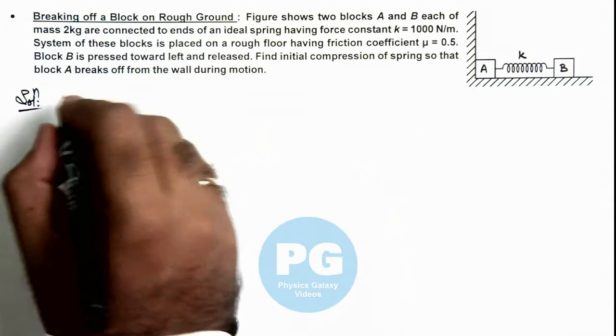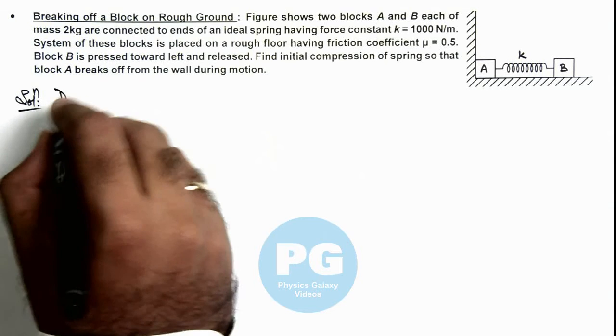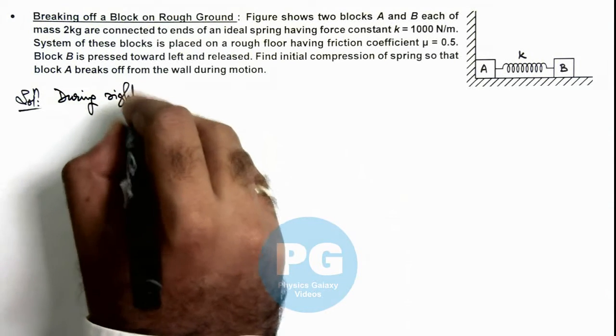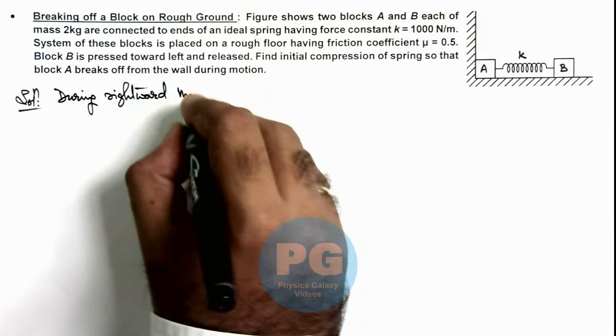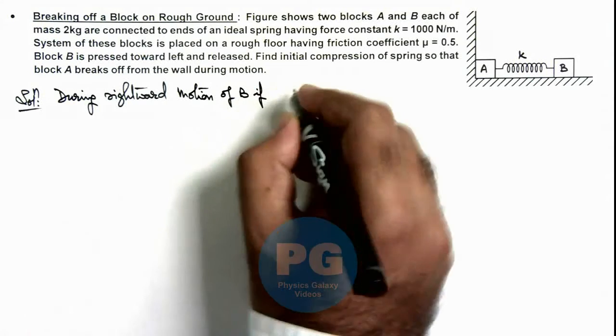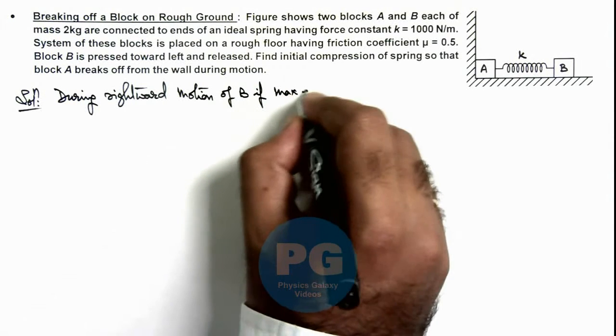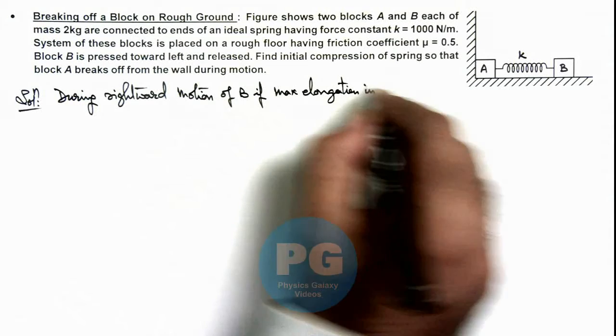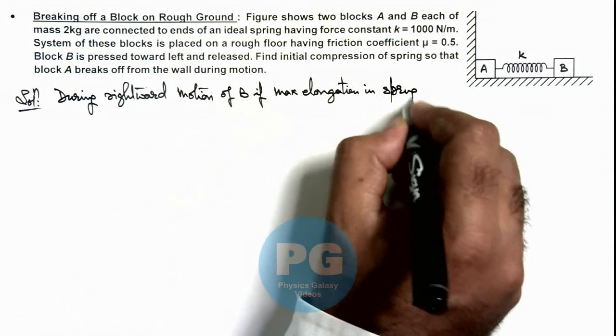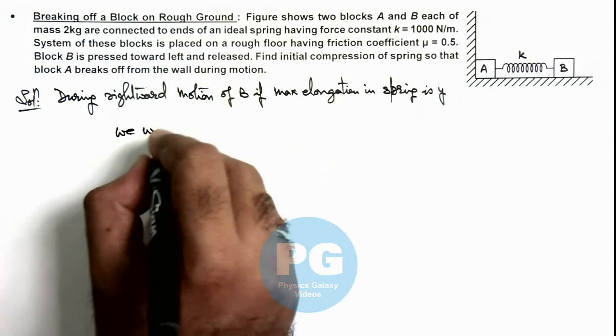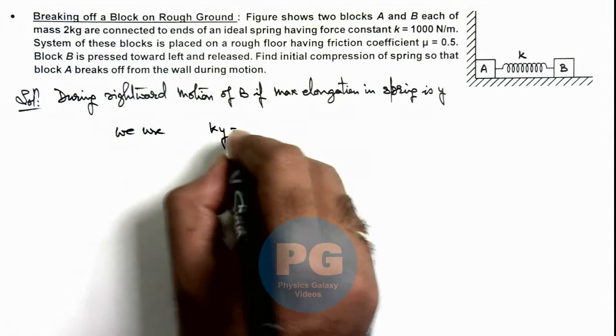So we can write, during rightward motion of B, if maximum elongation in spring is y, here we use ky should be equal to μmg.